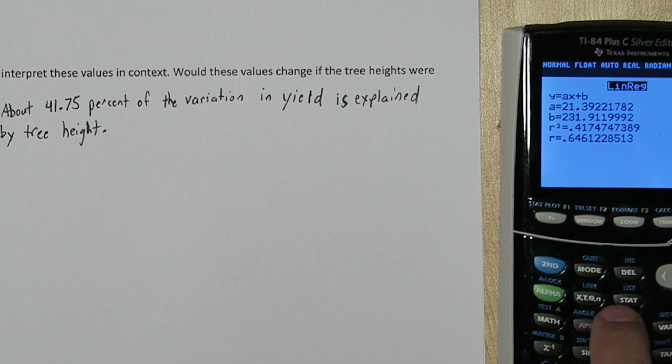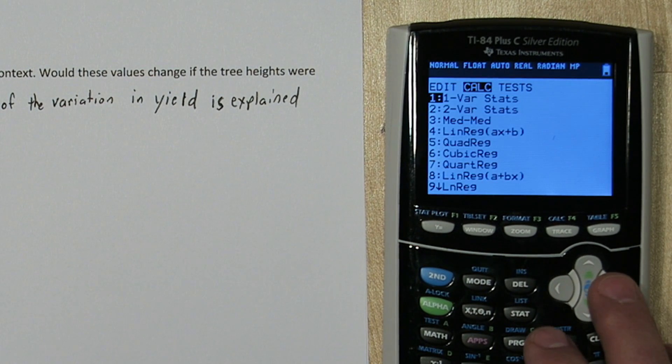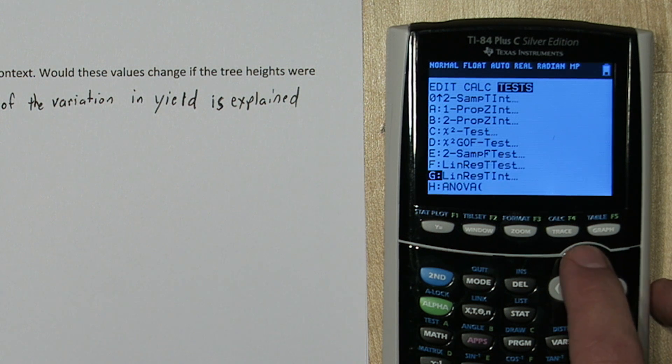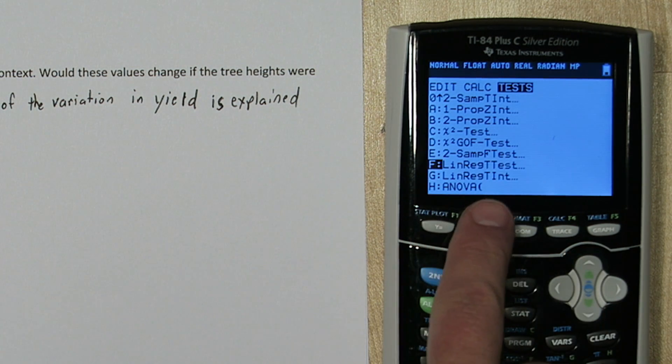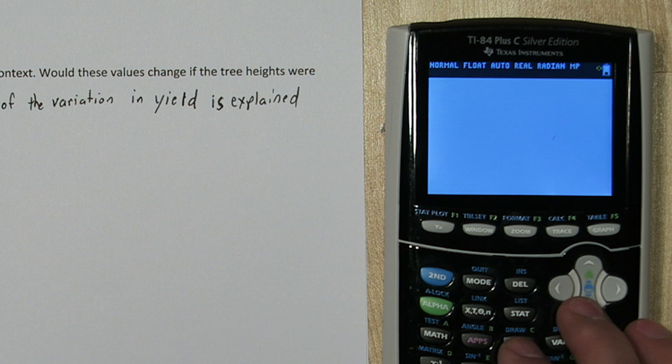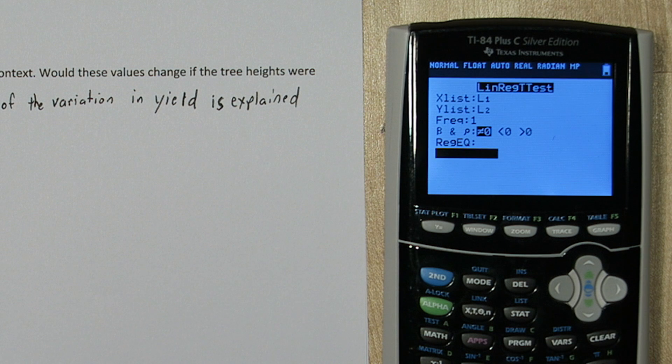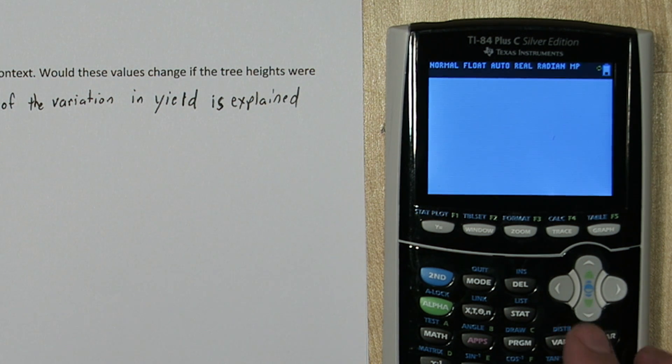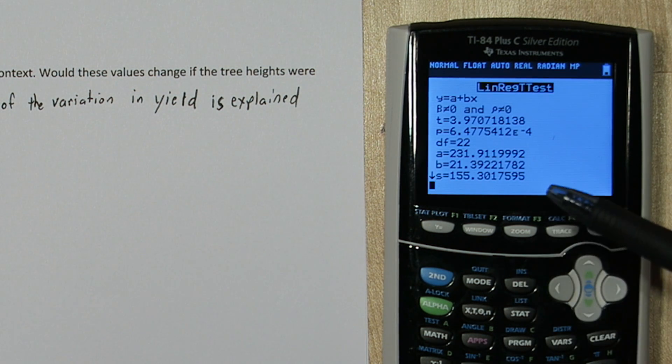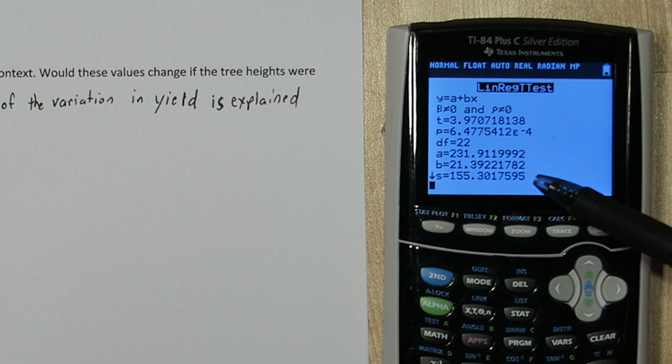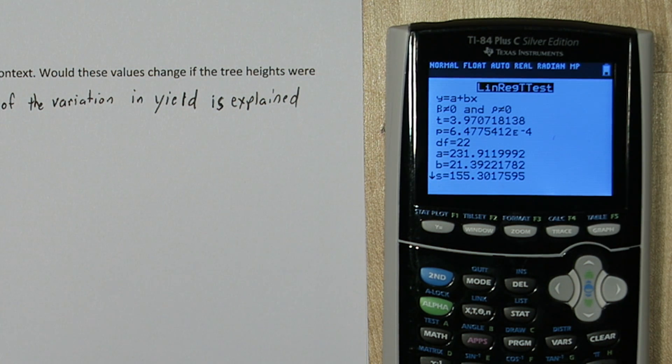To calculate S, press Stat, and go over to the Test menu. Now option F on my calculator is Lin-Reg-T-Test. If you click that, and for x-list you use list 1, and y-list list 2, ignore everything else, and just press Calculate. Now right here at the bottom, this is our S value. And you're actually going to learn what all these other things are later in your statistics course. But right now, let's just focus on that S value.